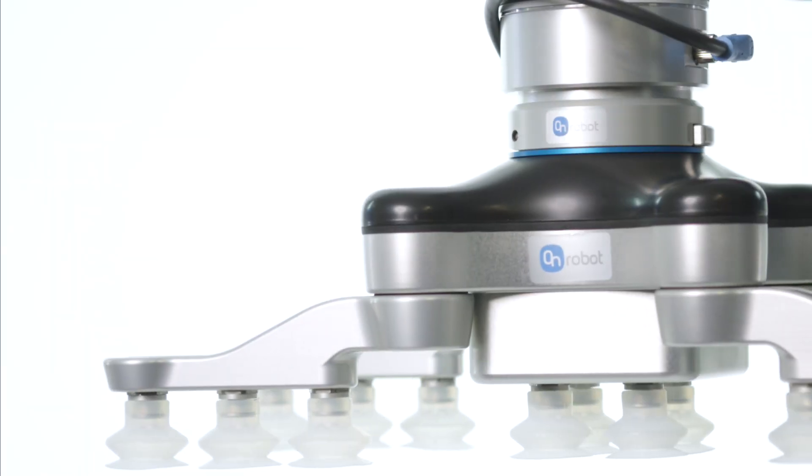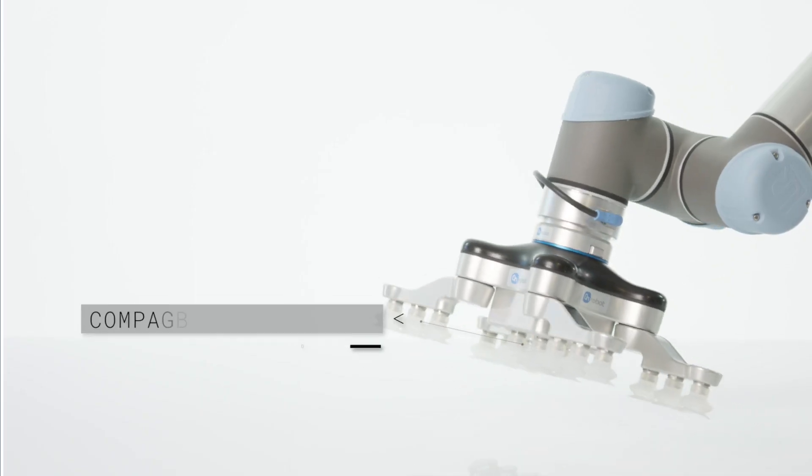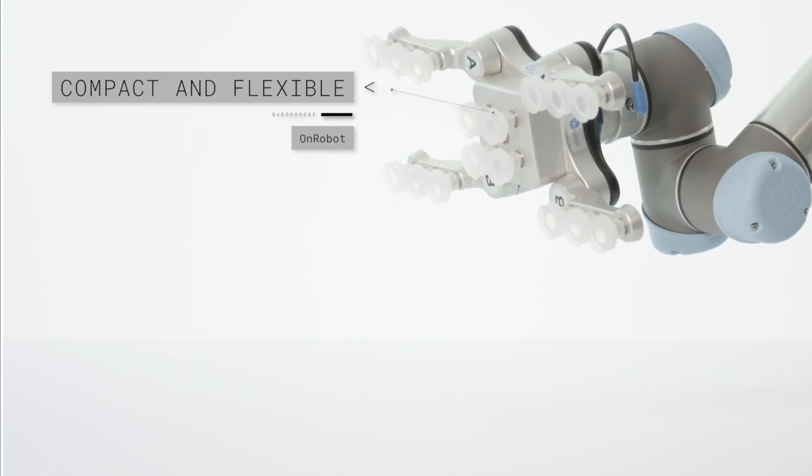Since it doesn't require external air supply, the VG10 is compact and easy to move around, giving you a more flexible production line.